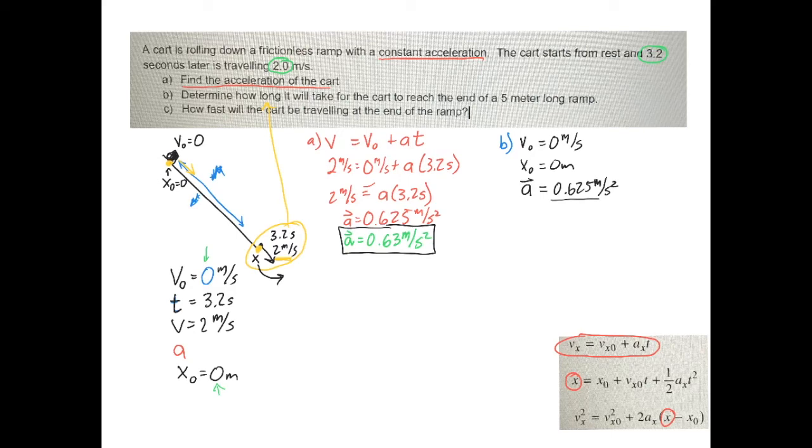And I know my answer was 0.63, but any time I actually use the number in calculations, I probably want to use the more precise number. Otherwise, what ends up happening is I round, so my answer's off a little bit, and then I round again, and my answer's off a little bit more. And by the time I go through three or four steps, I've rounded so many times, my answer is way off from where it should be. So we're going to go ahead and use all the digits there. So I know the initial velocity. I know the initial position. I know the acceleration. The other thing I know, of course, is that the final position is 5 meters away.